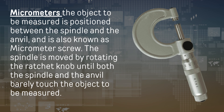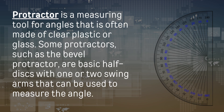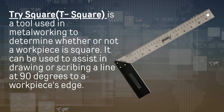A micrometer, also known as a micrometer screw, works by positioning the object to be measured between the spindle and the anvil. The spindle is moved by rotating the ratchet knob until both the spindle and the anvil barely touch the object to be measured. A protractor is a measuring tool for angles, often made of clear plastic or glass. Some protractors, such as the bevel protractor, are basic half-disks with one or two swing arms used to measure angles. A tri-square, or tee-square, is a tool used in metalworking to determine whether a workpiece is square, and can assist in drawing or scribing a line at 90 degrees to a workpiece's edge.